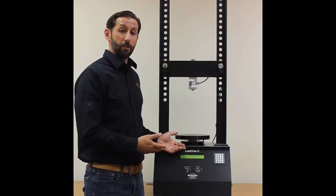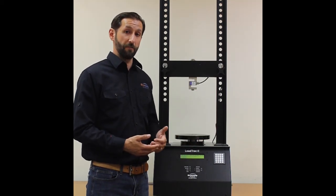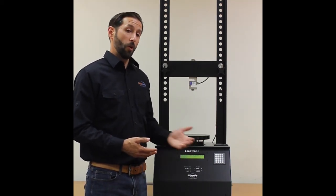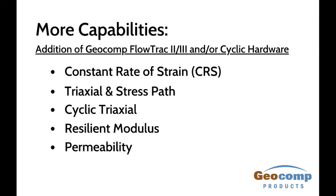If you combine the LoadTrack 2 with a Geocomp FlowTrack 2 pressure and volume control flow pump or our cyclic hardware, you can also do tests such as constant rate of strain consolidation, triaxial and stress path testing, cyclic triaxial, resilient modulus, and permeability.